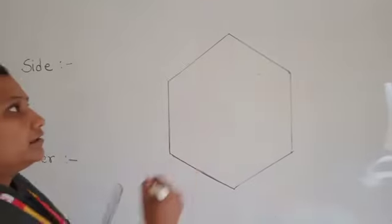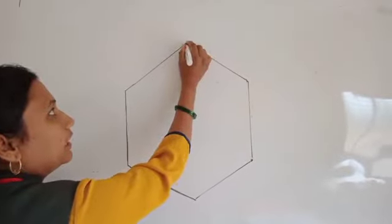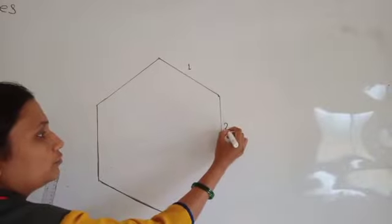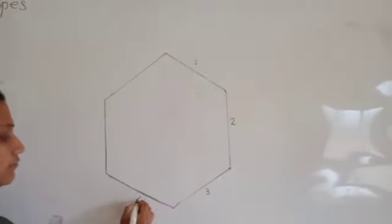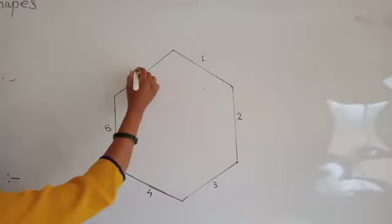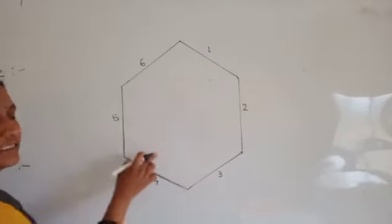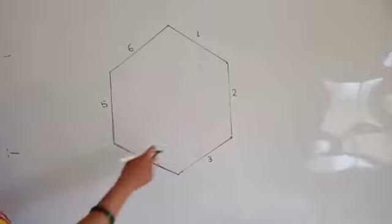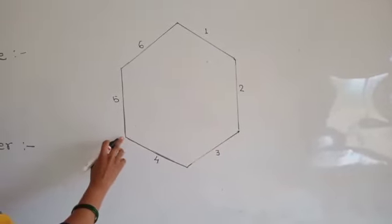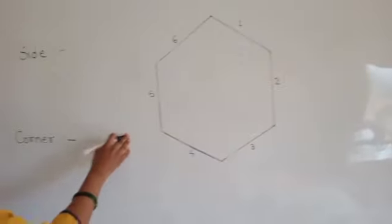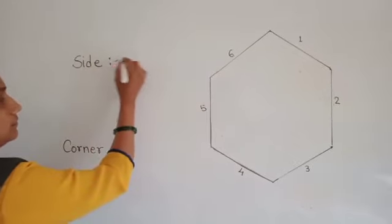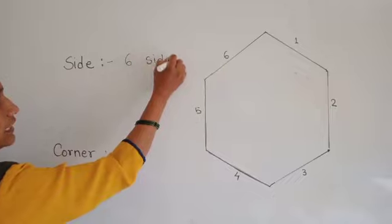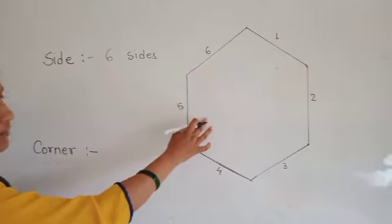Now I am labeling the edges of this shape with numbers: one, two, three, four, five, and six. How many edges does this figure have? This figure has six edges or six boundary lines. So the sides of this figure are six — this figure has six sides.